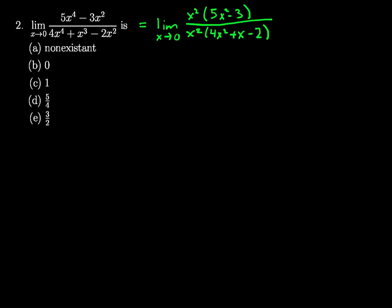But since with a limit as x approaches zero, we don't care what happens when x actually equals zero, I can cross off both of these terms because we'll never actually get to zero.